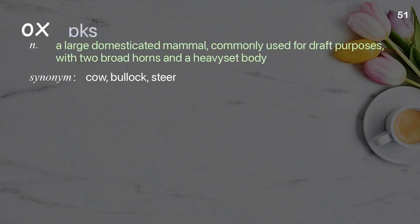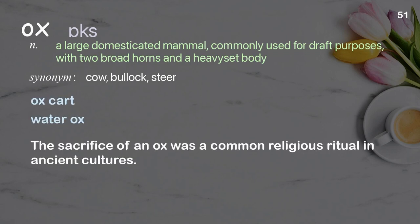Ox: A large domesticated mammal, commonly used for draft purposes, with two broad horns and a heavyset body. Examples: ox cart, water ox. The sacrifice of an ox was a common religious ritual in ancient cultures.